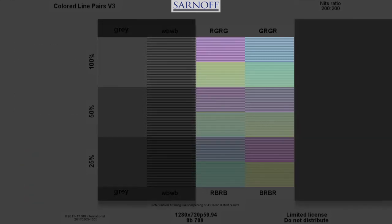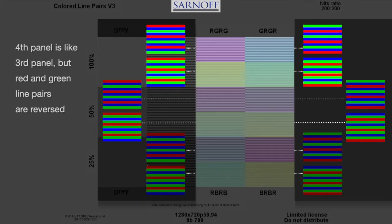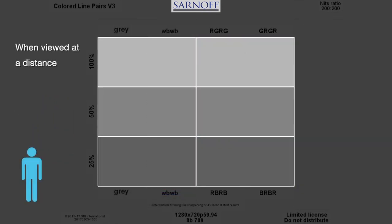The fourth panel is the third panel but with reversed line pairs. It should appear identical to the third panel. If it is not, the monitor may be processing the color of odd and even lines differently.